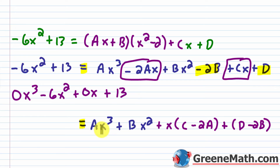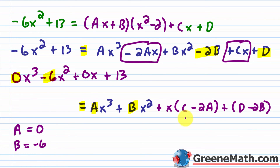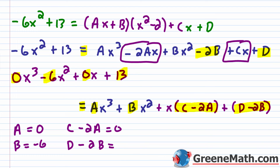For this equality to hold, we equate coefficients of matching powers. The coefficient for x cubed: a equals 0. The coefficient for x squared: b equals negative 6. The coefficient for x to the first power: c minus 2a equals 0. And for the constant term: d minus 2b equals 13.